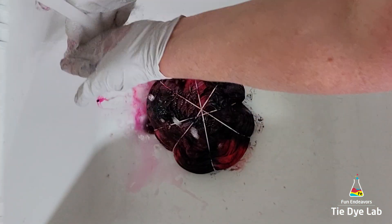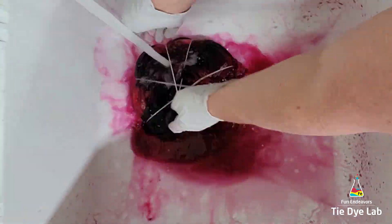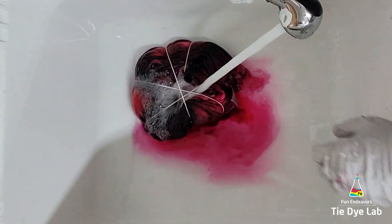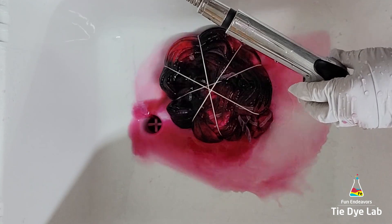To rinse the shirt I took it to my utility sink and began rinsing in cold water to rinse out the soda ash. I gradually warmed the water up to hot to rinse out the excess dye that didn't bond with the shirt.